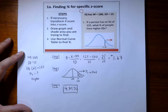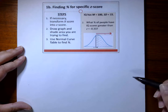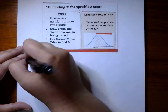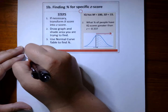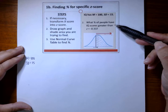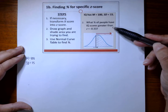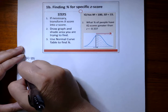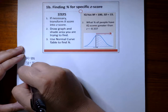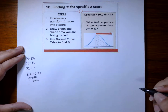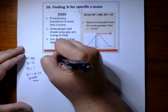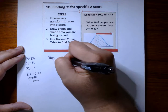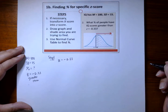Let's go to our second practice problem, which has a couple of different twists. We still have a mean of 100 and an SD of 15. The question here is: what percentage of people have IQ scores greater than z equals negative 0.33? So we're looking for the percentage for z equals negative 0.33, but greater than. Step 1: transform the x-score into a z-score — well, that step's done for us. Our z is negative 0.33.